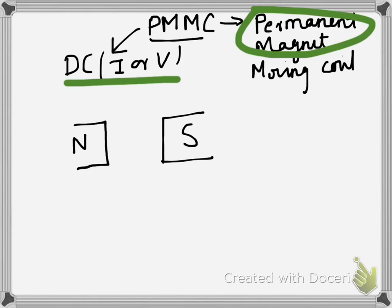As the name suggests, it also has to have a moving coil. So let's consider one coil here which is rectangular in shape — it is a moving coil. Now for any instrument there has to be a pointer, so let's consider one pointer.